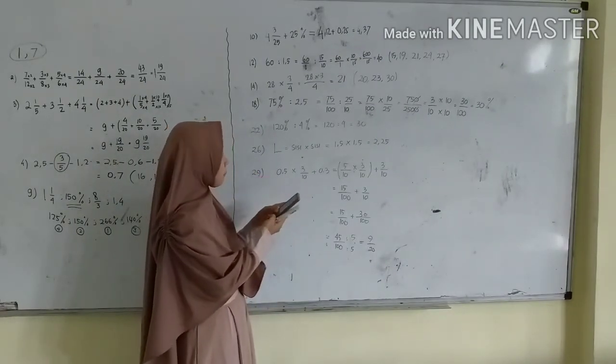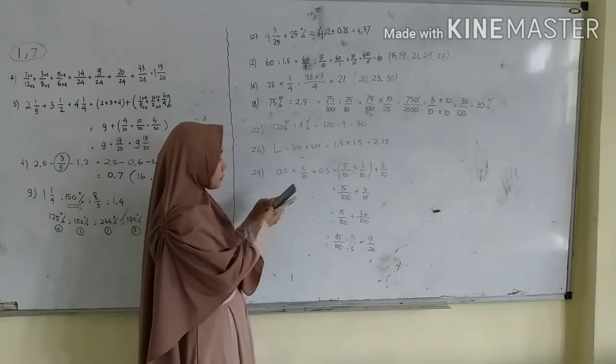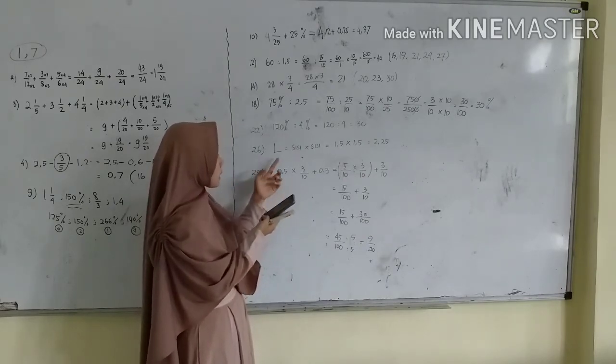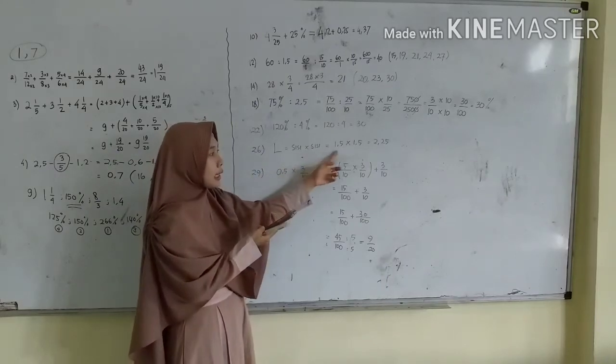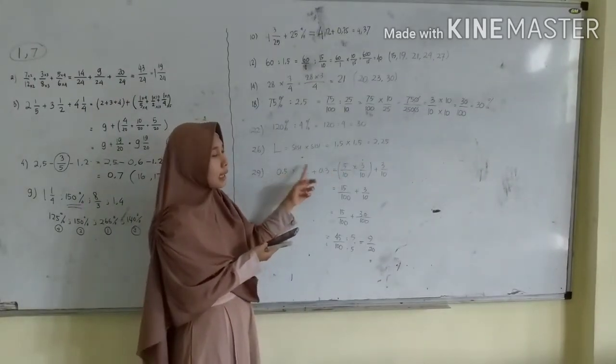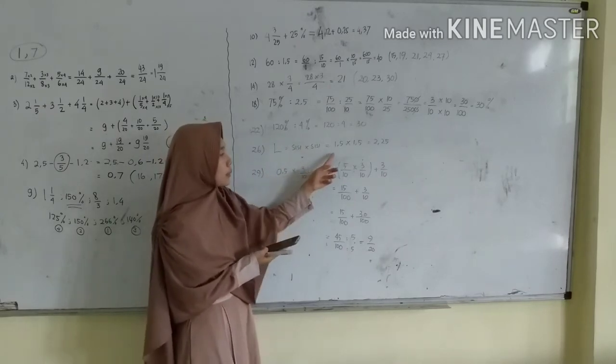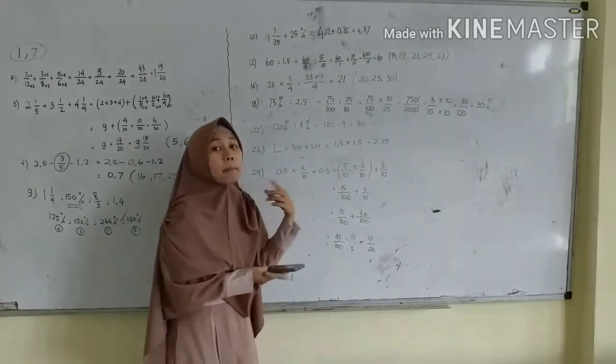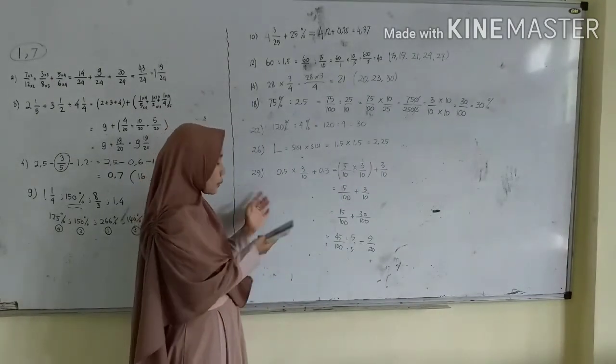Nomor 26 ditanyakan luas persegi ya. Luas persegi jika diketahui sisinya 1,5 sentimeter maka luasnya adalah sisi dikali sisi sama dengan 1,5 dikali 1,5, 2,25.